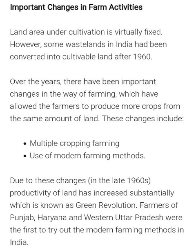Now we will tell you about the general criteria for the production of goods and services, which are popularly known as factors of production. If you have a question about what the factor of production is, you have to write: land, labor, and capital. These are the three major basic factors necessary for production.